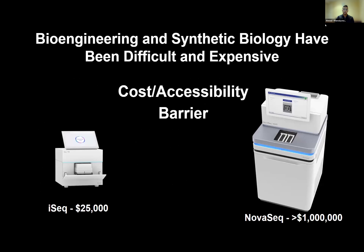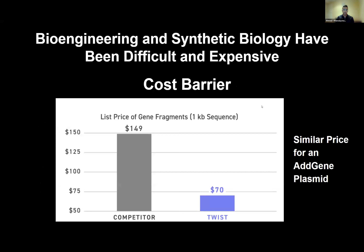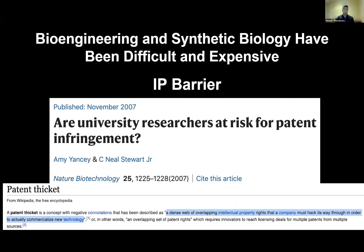But bioengineering has been difficult and expensive. There are three main barriers: cost, accessibility, and IP barriers. For example, these sequencers are very expensive and are often only found in academic labs — you don't find them in community labs. And then genetic fragments also cost some money, and then there's the IP barriers.